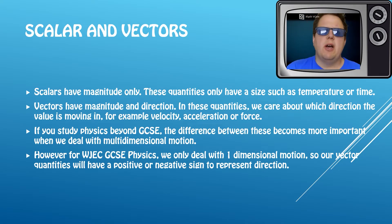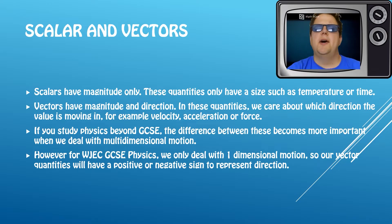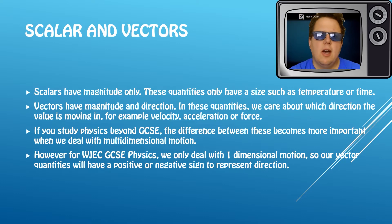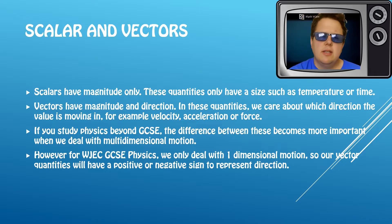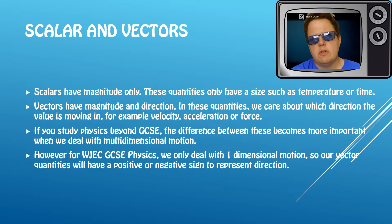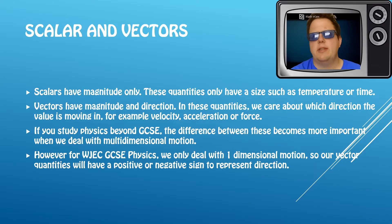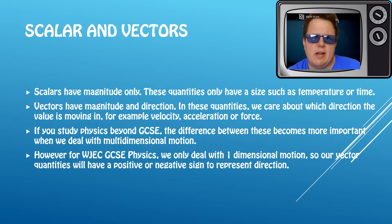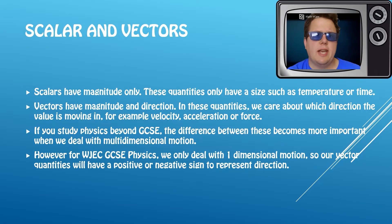On to the first bit of proper content: scalars and vectors. This is a key difference between pre-GCSE and A-level work in how we deal with scalars and vectors. Scalars have magnitude only — magnitude is just a word for size — so a quantity that only has a size is a scalar. For example, temperature and time don't have a direction. However, a vector quantity has both magnitude and a direction, so we care about which way it's going. For example, velocity is a vector; speed is a scalar.